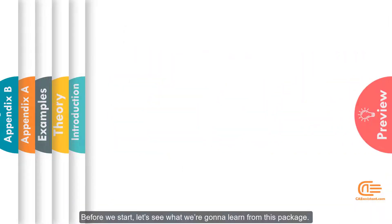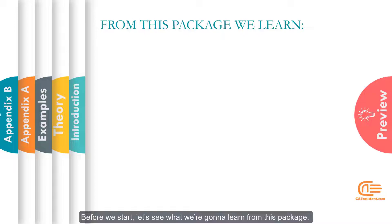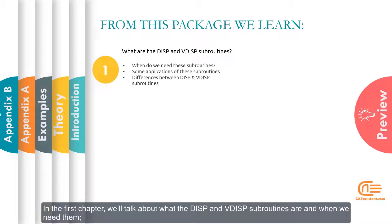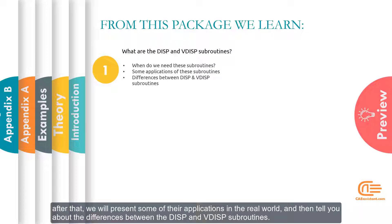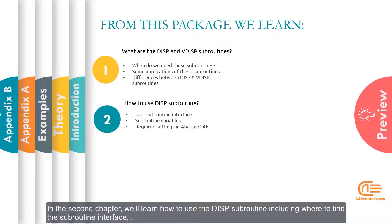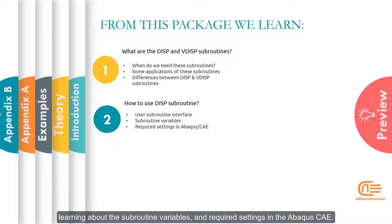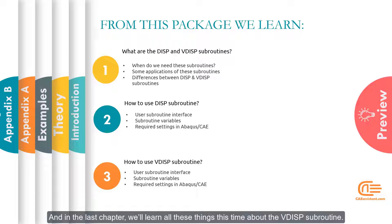Before we start, let's see what we're going to learn from this package. In the first chapter, we'll talk about what the DISP and VDISP subroutines are and when we need them. After that, we will present some of their real-world applications and then explain the differences between the DISP and VDISP subroutines. In the second chapter, we'll learn how to use the DISP subroutine, including where to find the subroutine interface, learning about the subroutine variables and required settings in Abacus CAE. And in the last chapter, we'll learn all these things about the VDISP subroutine.